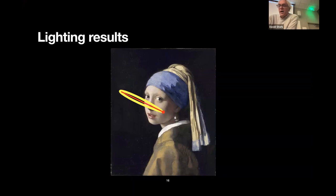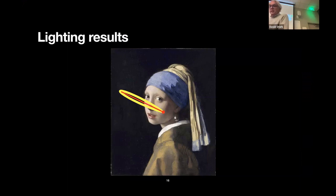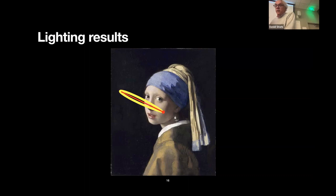So what? Why would an art scholar care about these results? This is not a portrait — we don't know who this girl is. Instead, it's a so-called trony or character study head, celebrating youth and beauty, primarily for the delectation of a male patron. There have been weak suggestions that Vermeer painted the girl from his imagination, but the incredible agreement among the lighting estimates makes this extraordinarily unlikely. Imagine five of the methods agreed closely but the estimate from the pearl differed significantly — that would suggest the pearl was added later, possibly by another artist. This happens occasionally in art, for instance a hat added later.